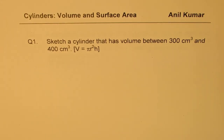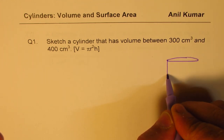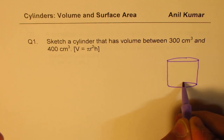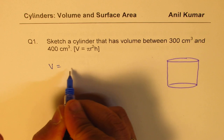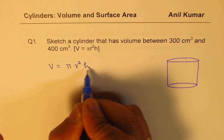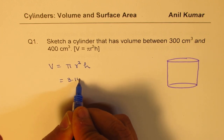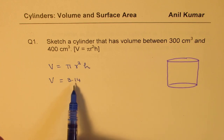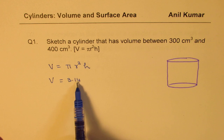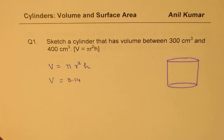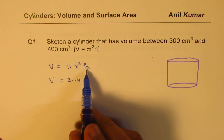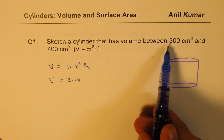Let's begin with the very first one, which is to sketch a cylinder that has volume between 300 centimeter cube. So let's sketch one cylinder. Now how do you get volume between 300 to 400? We know the volume formula is pi r squared h. Now pi is 3.14. So if I multiply by 100, I get 314. So if r squared times h equals around 100, I could get a volume in that range.